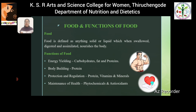Energy yielding: foods rich in carbohydrates, fats, and proteins provide us energy. One gram of carbohydrates provides 4 calories, one gram of protein provides 4 calories, and one gram of fat provides 9 calories.